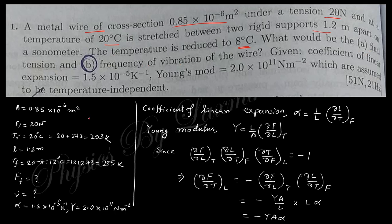So this is the cross-section area, the initial force, the initial temperature, the length, and the final temperature is 8 degrees — reduced by 8 degrees. You need to find out the final tension and frequency, where alpha (coefficient of linear expansion) and Y (Young's modulus) are given.